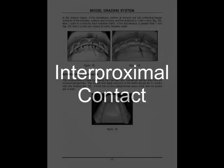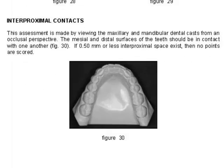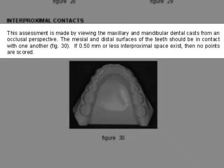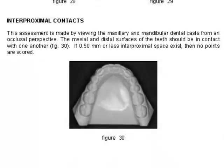Interproximal Contacts. This assessment is made by viewing the maxillary and mandibular dental casts from an occlusal perspective. The mesial and distal surfaces of the teeth should be in contact with one another. If 0.5 mm or less interproximal space exists, then no points are scored.